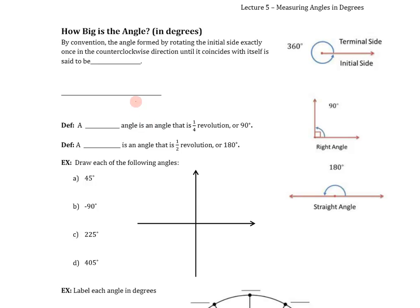Now let's talk about what we mean by the actual numerical measure of an angle. How big is the angle? By convention, an angle is formed by rotating the initial side exactly once in the counterclockwise direction until it coincides with itself is said to be 360 degrees. One revolution is equal to 360 degrees.